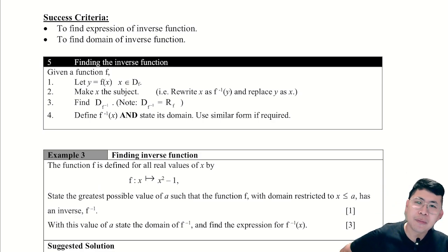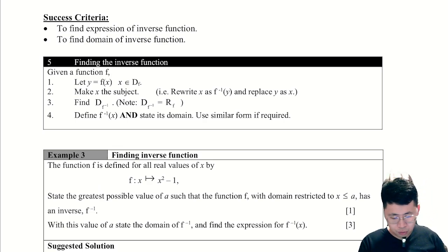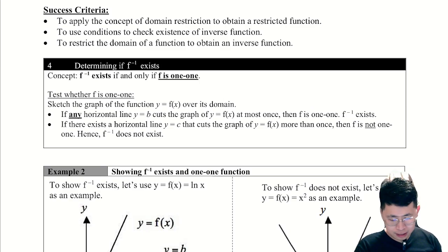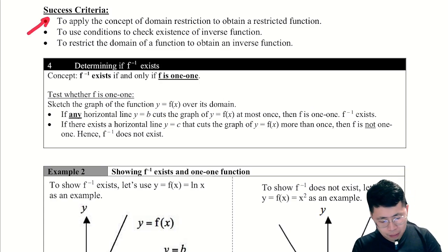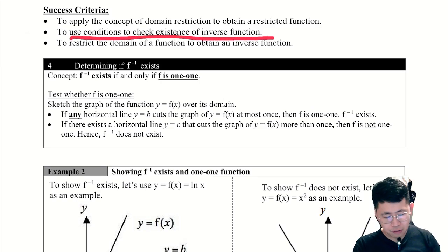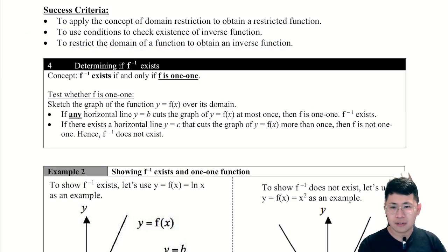Hi everyone, we are in a supplementary worksheet for Chapter 9 on functions. In this video we're going to look at concept number 4, which is to determine whether f inverse exists. We're going to apply the concept of domain restriction to obtain a restricted function, use the conditions to check existence of inverse function, and restrict the domain to obtain that inverse function.